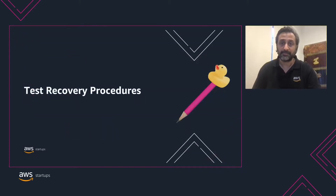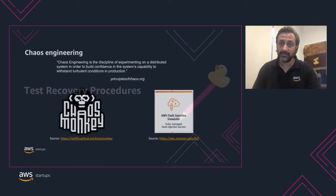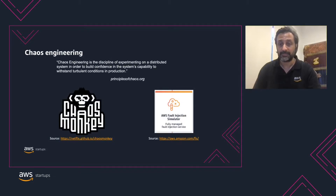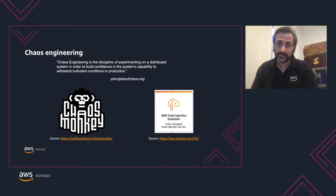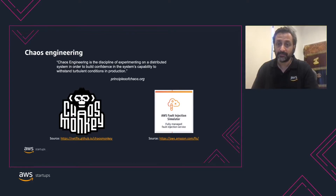Moving on to the second principle: in the cloud, you can test how your workload fails and validate your recovery procedures. You can use automation to simulate different failures or to recreate scenarios that led to past failures. This approach exposes failure pathways that you can test and fix before a real failure scenario occurs. You can use tools like Chaos Monkey, or our service AWS Fault Injection Simulator, which is a fully managed service for running fault injection experiments. It simplifies the process of setting up and running these experiments across a range of AWS services, allowing you to build confidence in your application behavior.